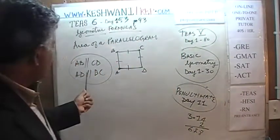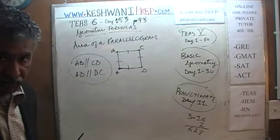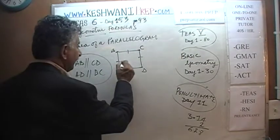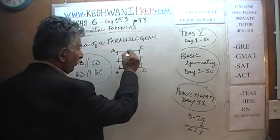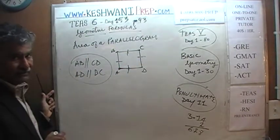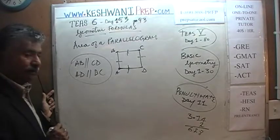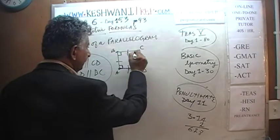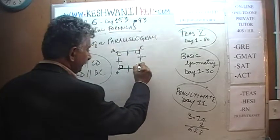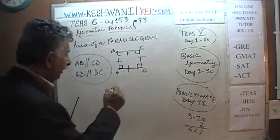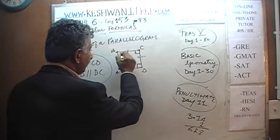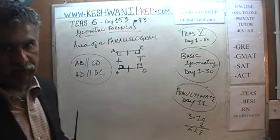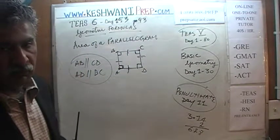Not only do opposite sides have to be parallel, just like in a parallelogram, but the second condition a square must have is that all four sides are equal. And the third condition is that all angles are 90 degrees. If all of the angles are 90 degrees and all four sides are equal to each other, then your parallelogram turns into a square.